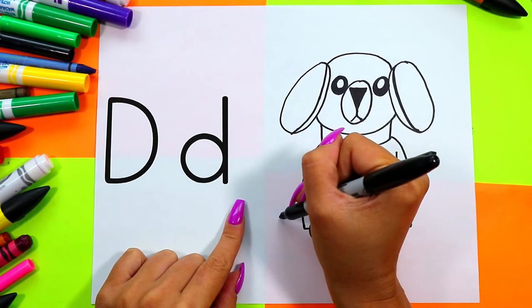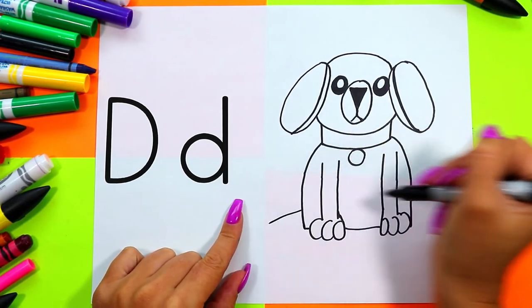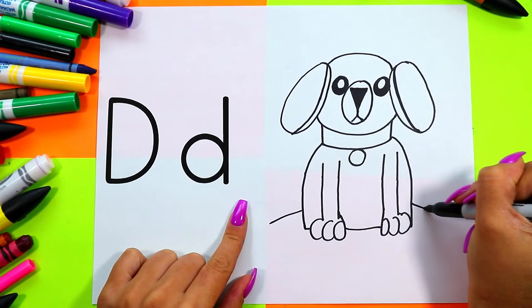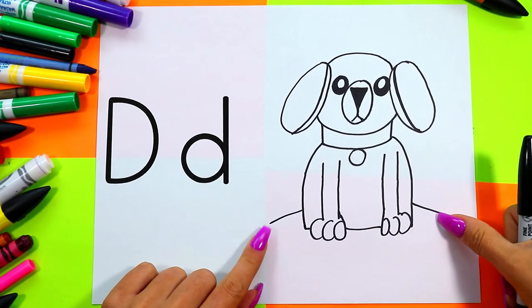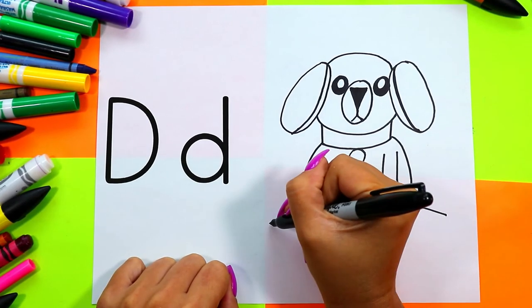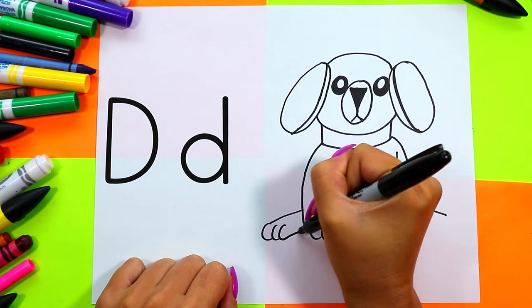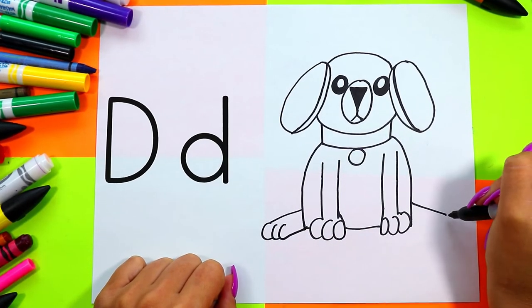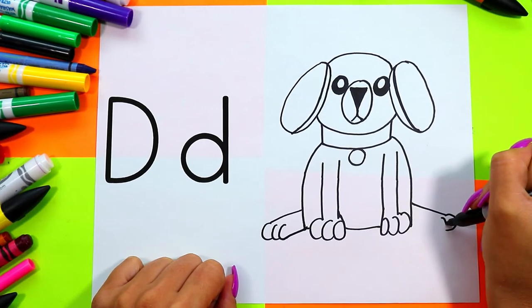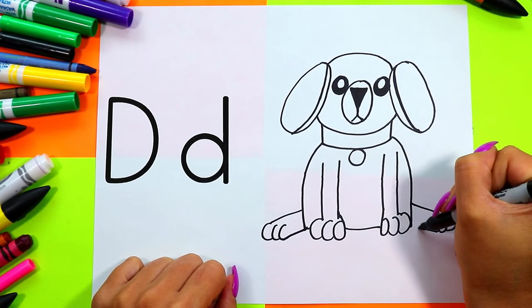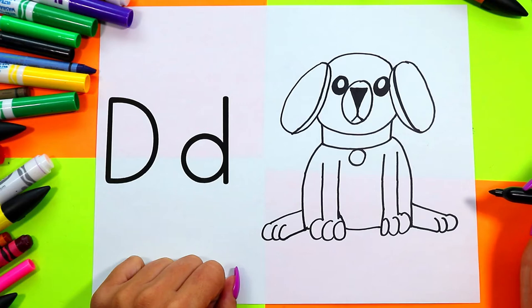Next we're going to draw one line out and a second line out at the bottom of dog's body, and draw three dog toes and then connect back to that body.